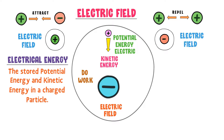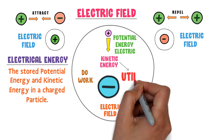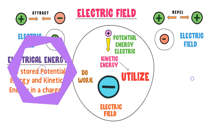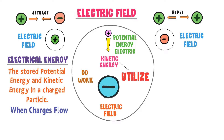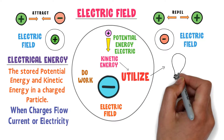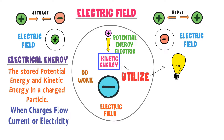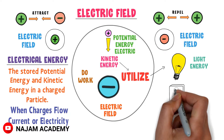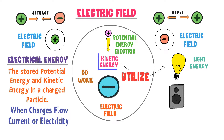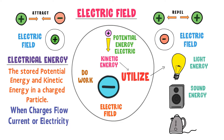Now, how can we obtain electrical energy from this point charge? When this point charge accelerates towards the negative charge, we utilize its motion or its kinetic energy. Remember that when charges flow from one point to another, this phenomenon is known as current or electricity. For example, a bulb will convert the kinetic energy of charges to light energy. A loudspeaker will convert the kinetic energy of charges to sound energy. An electric heater will convert the kinetic energy of charges to heat energy.